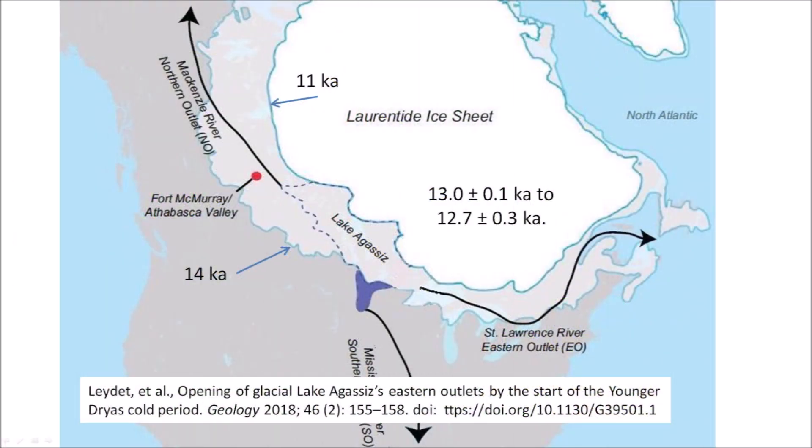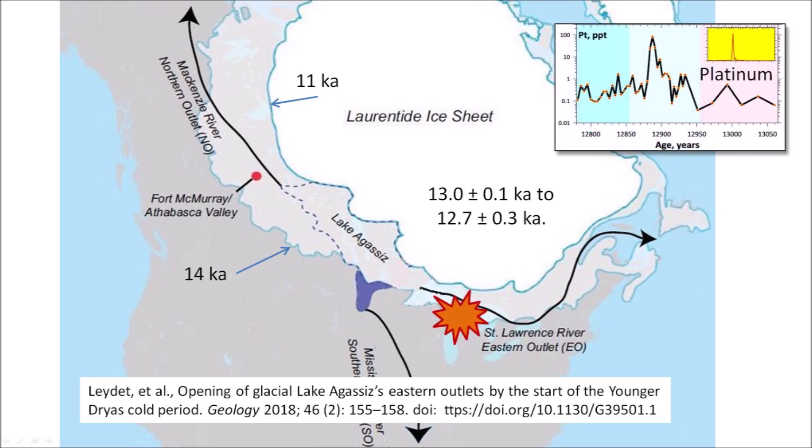A paper by Leydet et al. tells us that Lake Agassiz started draining eastward toward the North Atlantic between 13,000 to 12,700 years ago, concurrent with increased runoff to the Gulf of Mexico and through the lower Great Lakes to the Gulf of St. Lawrence. An extraterrestrial impact on the Laurentide Ice Sheet at the onset of the Younger Dryas could have fragmented the ice by the Great Lakes, opened up the eastern outlet for Lake Agassiz drainage, triggered the megafaunal extinction, and dispersed platinum-rich material creating a sedimentary layer with a high level of platinum. There is still much to be learned.